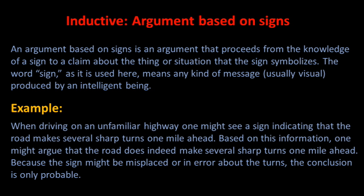An argument based on signs is an argument that proceeds from the knowledge of a sign to a claim about the thing or situation that the sign symbolizes. The word 'sign,' as used here, means any kind of message, usually visual, produced by an intelligent being. For example, when driving on an unfamiliar highway, one might see a sign indicating that the road makes several sharp turns one mile ahead, and based on this, argue that the road does indeed make several sharp turns one mile ahead. Because the sign may be misplaced or in error about the turns, the conclusion is only probable.